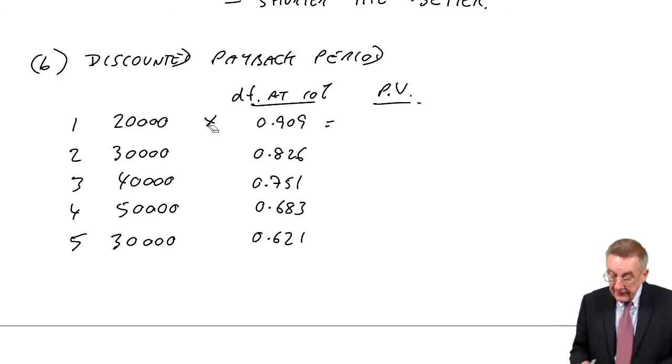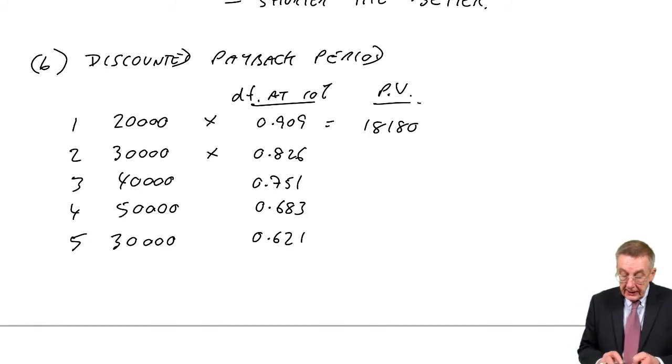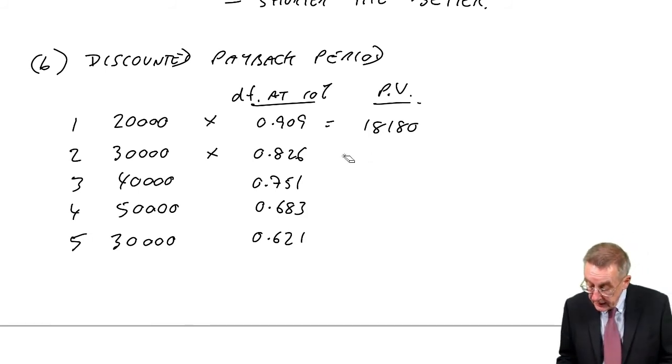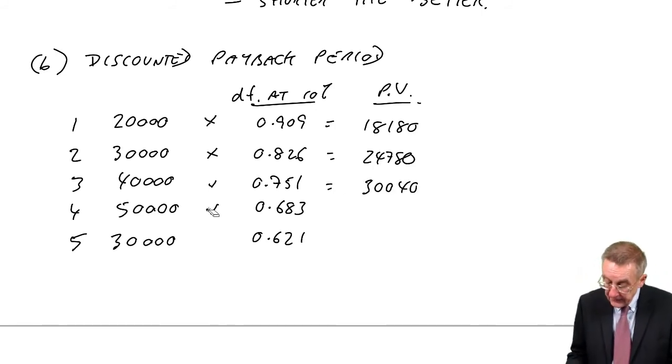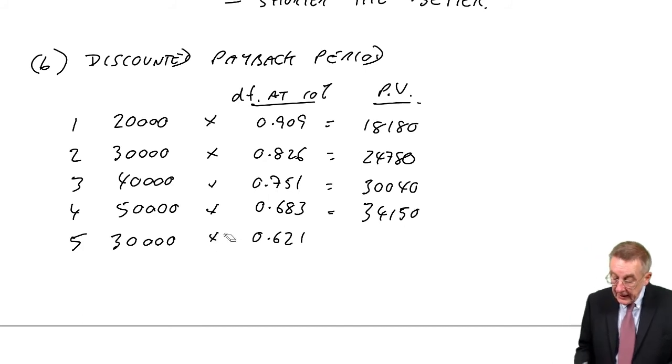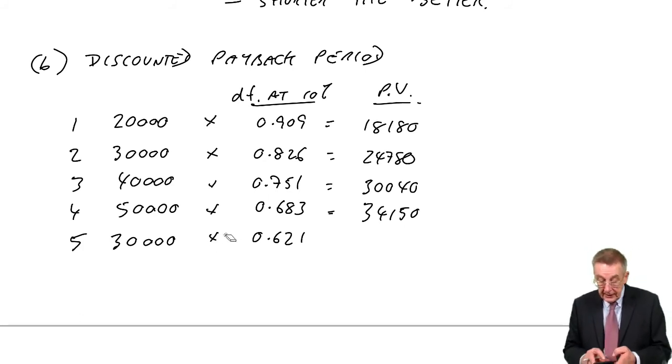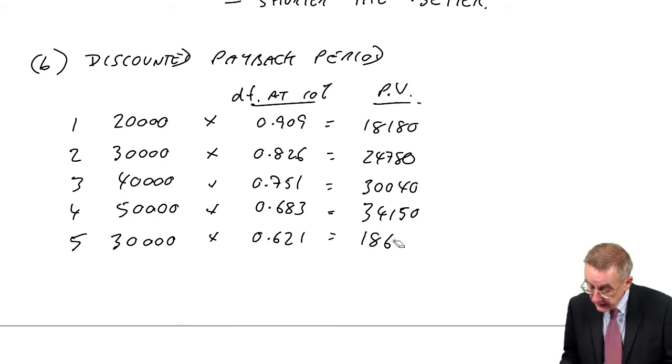So the present values: 20 times 0.909 is 18,180. 30 times 0.826 is 24,780. 40 times 0.751 is 30,040. 50 times 0.683 is 34,150. And finally, 30 times 0.621 is 18,630.